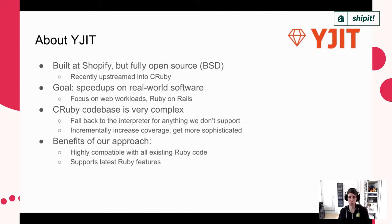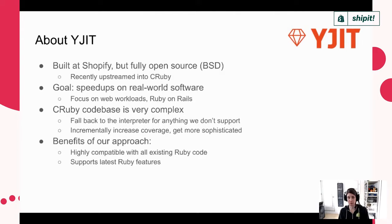The goal of the project is to produce speedups on real-world software. At Shopify, we're really interested in web workloads, in particular Ruby on Rails. It's a very challenging project because CRuby is a very complex codebase that's over 25 years old. The approach we've taken is to fall back to the interpreter for things we don't support in YJIT, and to incrementally increase coverage and add more sophisticated optimizations. This project is a team effort led by the Ruby and Rails infrastructure group at Shopify, with major contributions from people at GitHub.